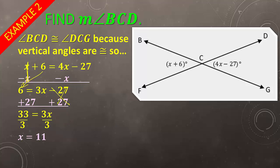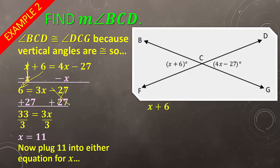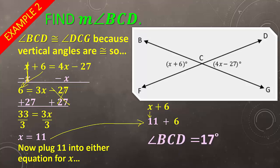We're not done, because the problem asked us to find the measure of angle BCD — all we did was find X. So plug 11 into either expression; I chose the easier one, X plus 6. Since X equals 11, that's 11 plus 6, so angle BCD equals 17 degrees. To check: 4 times 11 minus 27 is 44 minus 27, which is also 17. So I know I'm right.